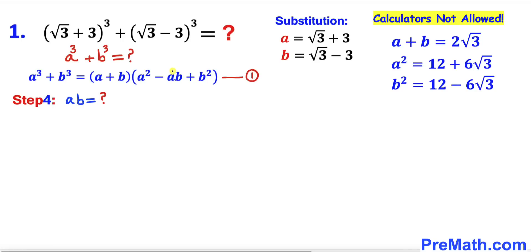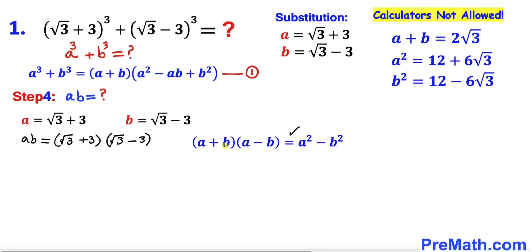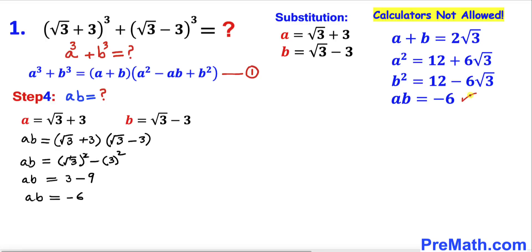Now let's find the value of ab. Multiplying a times b gives us: square root of 3 plus 3, times square root of 3 minus 3. Applying the identity (a plus b)(a minus b), the right-hand side becomes square root of 3 whole squared minus 3 squared, which gives us simply negative 6. So a times b equals negative 6.